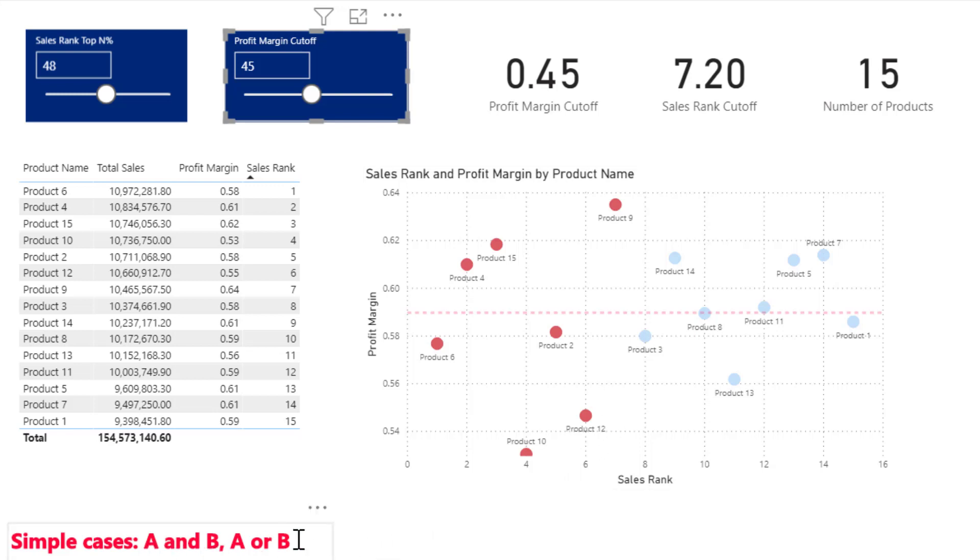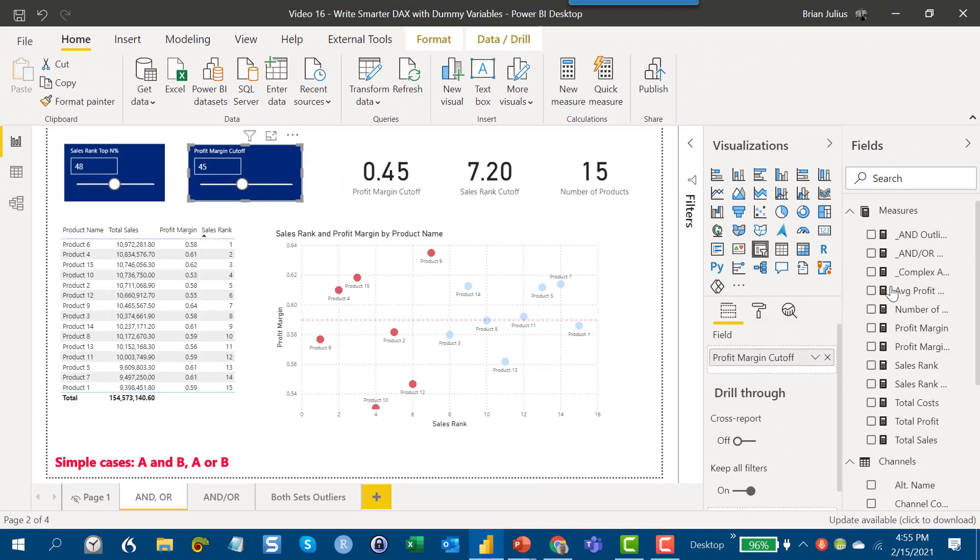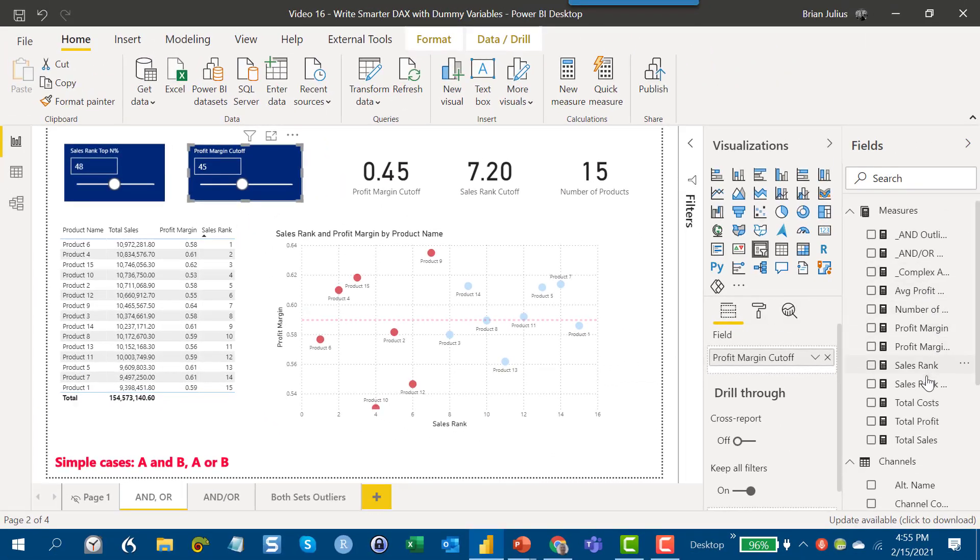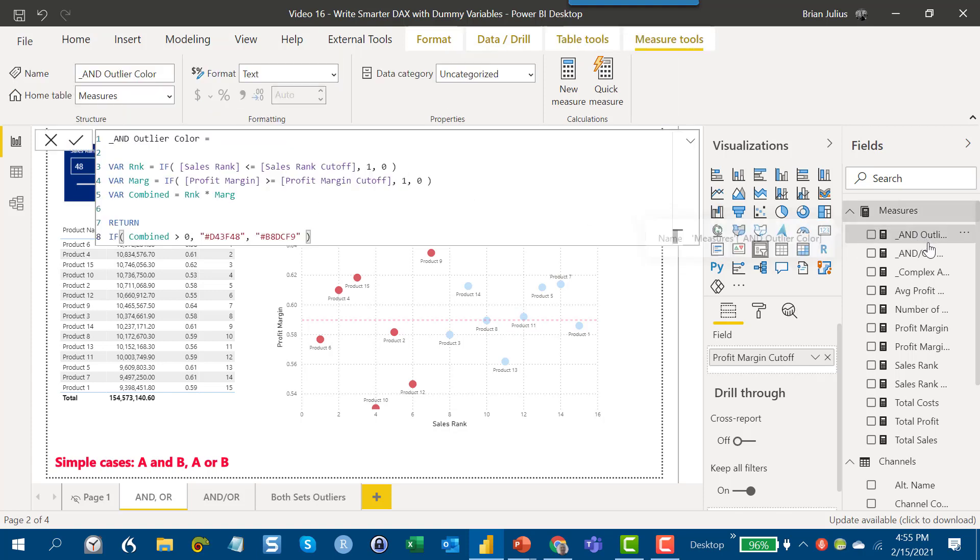Most of this is pretty simple, this is just kind of relatively standard DAX. Sales rank just a RANKX and then some basic total cost, total profit, profit margin calculations, harvesting the values from these sliders, but the measure that does most of the heavy lifting here is this one.